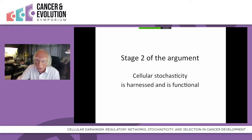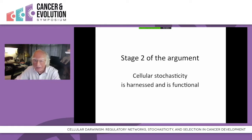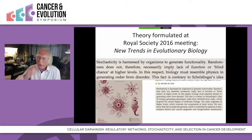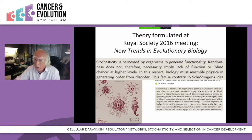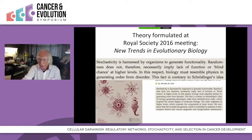That brings me to stage two of the argument: that cellular stochasticity is not only very large, even in cloned populations with the same genome in each cell, but obviously even larger in populations that have already developed diversity — and it is also harnessed and functional. I highlighted this point at a Royal Society meeting four years ago on new trends in evolutionary biology. My conclusion, published subsequently in a Royal Society journal, is that stochasticity is harnessed and used by organisms to generate functionality. Randomness at the level of mutations does not, therefore, necessarily imply lack of function or blind chance at higher levels.